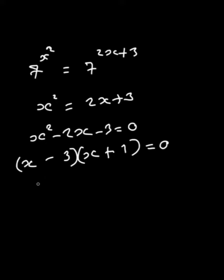So, the product is 0, then either one is 0. This is 0 or that is 0. Adding both sides 3, you get x is 3 or subtracting 1 from both sides, x is negative 1.